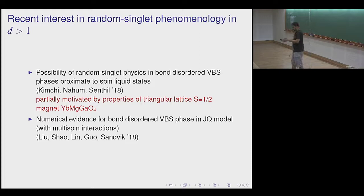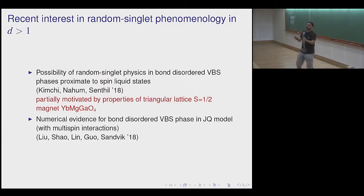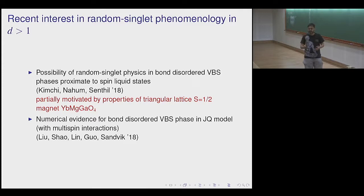There is a theoretically interesting question of whether you can have random singlet phenomenology as an asymptotically exact statement in any SU(2)-symmetric Heisenberg antiferromagnet with disorder in dimension higher than one. There's been recent interest in this phenomenology to explain data, sparked partly by a paper from Senthil's group on YbMgGaO₄, arguing that many of its measured properties can be understood in terms of random singlet physics induced by bond-disordered VBS phases near a spin liquid.